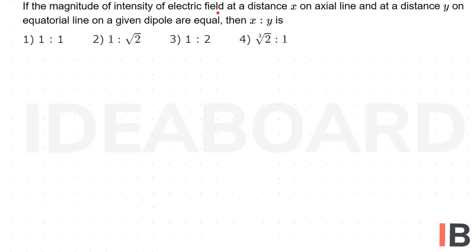If the magnitude of intensity of electric field at a distance x on axial line and at a distance y on equatorial line on a given dipole are equal, then x is to y is? Now in the given situation...